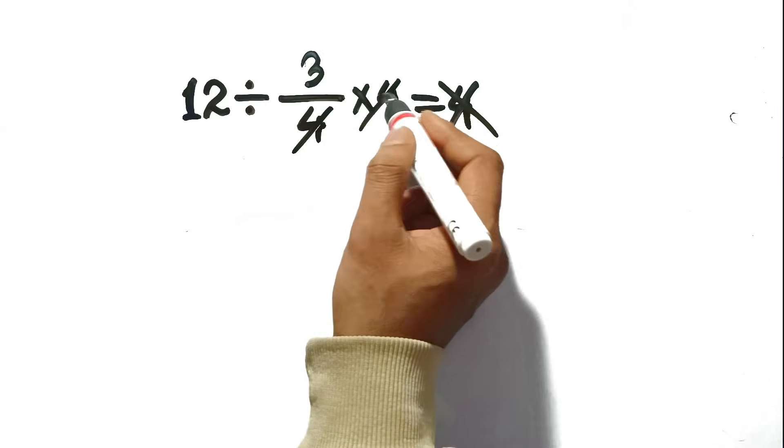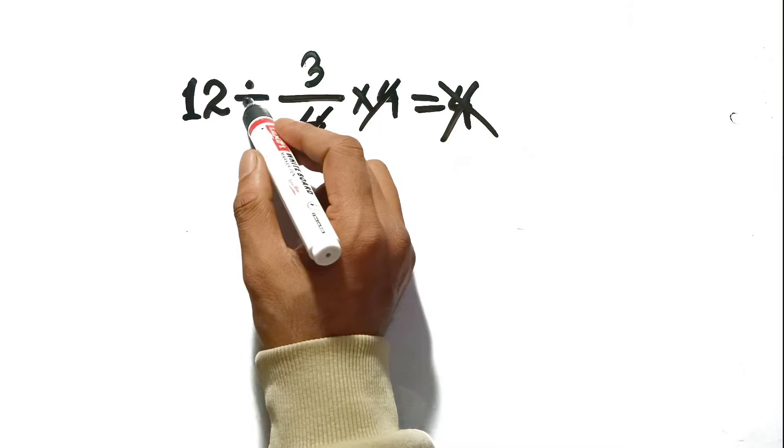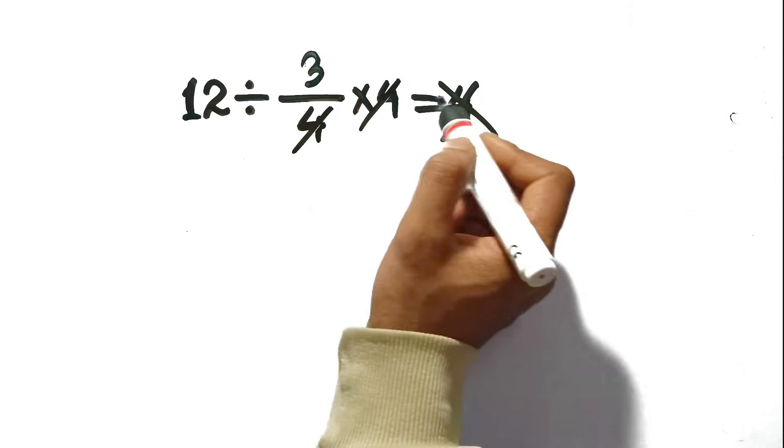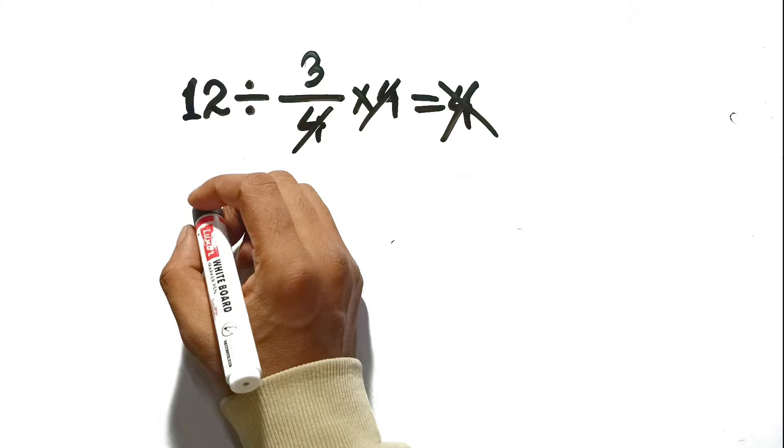It feels so satisfying. You just cross them out, the fraction disappears, and you're left with 12 divided by 3. And obviously, 12 divided by 3 is 4. It seems like the perfect tidy solution.